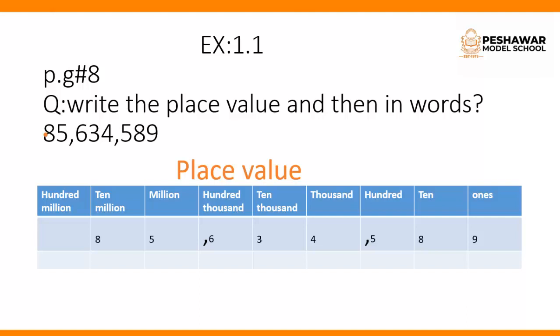The next period is called the thousands period. The place value of 4 is thousands, the place value of 3 is ten thousands, and the place value of 6 is hundred thousands. This is called the thousands period, and all these periods are separated with the help of commas. The last period is called the millions period. The place value of 5 is millions, and the place value of 8 is ten millions.